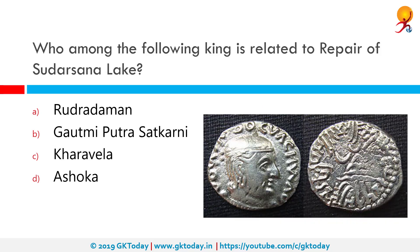Who among the following kings is related to the repair of Sudarshan Lake? The correct answer is Rudradaman. The Junagadh rock inscription mentions that the Shaka ruler Rudradaman, who ruled between 130 and 150 AD, had taken up the task of restoration of Lake Sudarshan. Rudradaman I was a Shaka ruler from the western Kshatrapas dynasty.